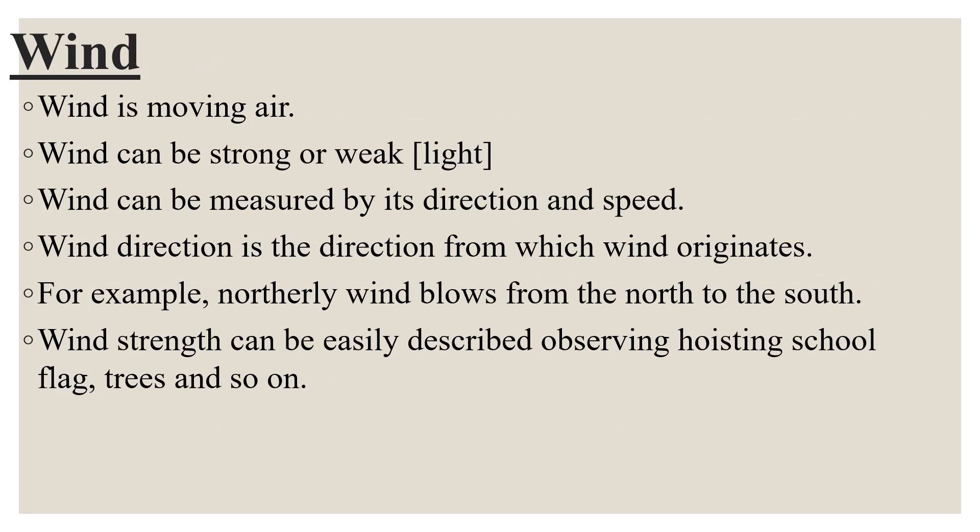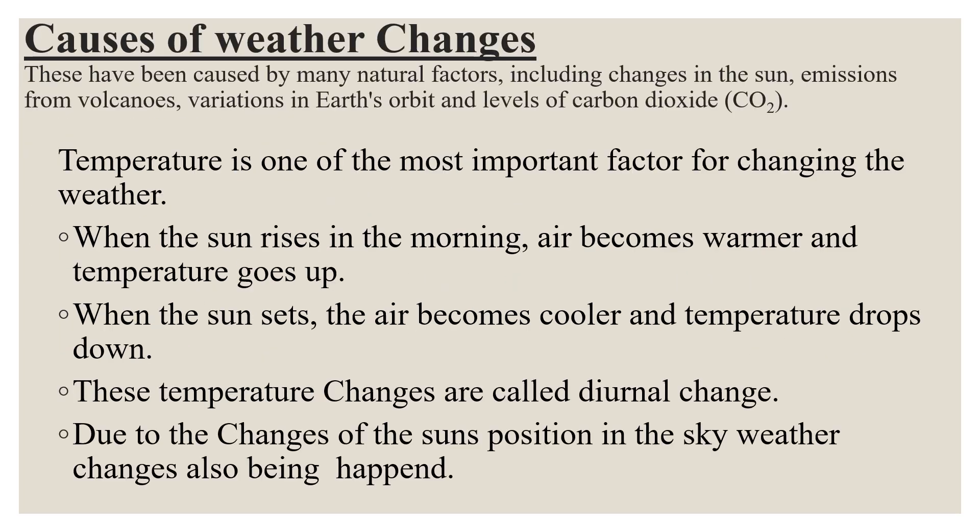What is wind? Wind is moving air. Wind can be strong or weak — or we can say light. Wind can be measured by its direction or speed. Wind direction is the direction from which wind originates. For example, a northerly wind blows from the north to the south. Wind strength can be easily described by observing hoisting flags, trees, and so on. Causes of weather changes.